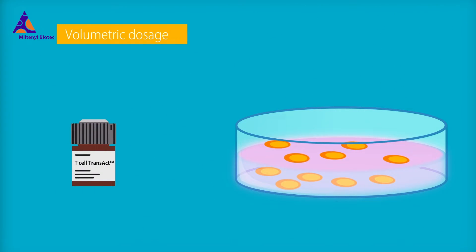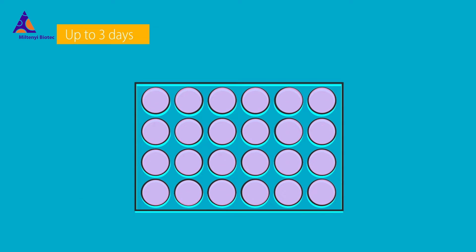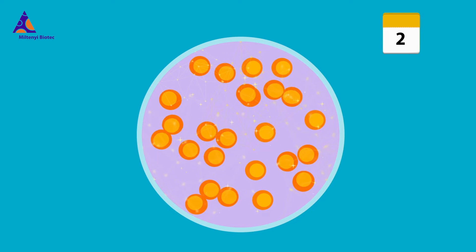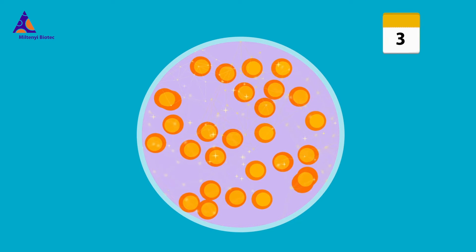T-Cell TransAct is dosed volumetrically and directly added to the T-cell culture. The T-cell culture is incubated for up to three days. During this time, T-cells are physiologically activated and start to proliferate.